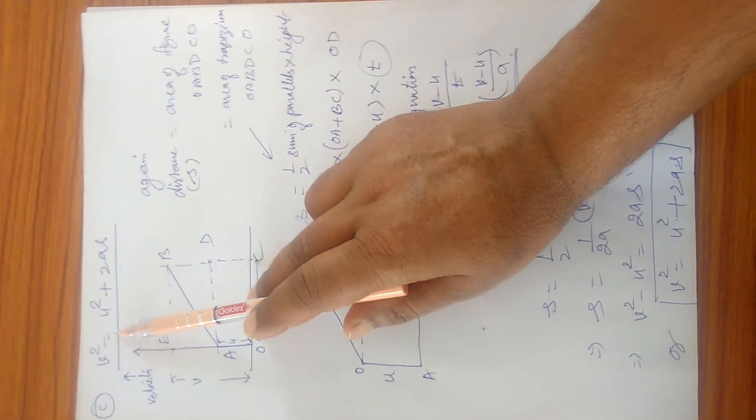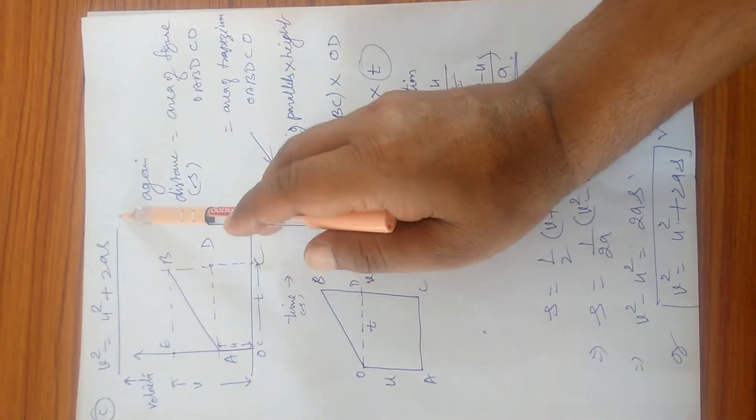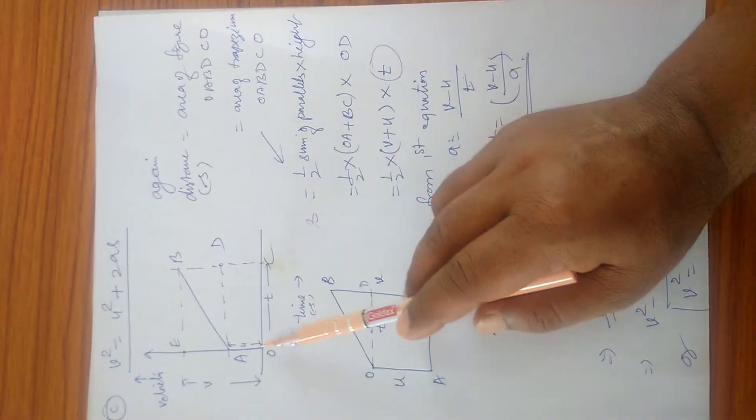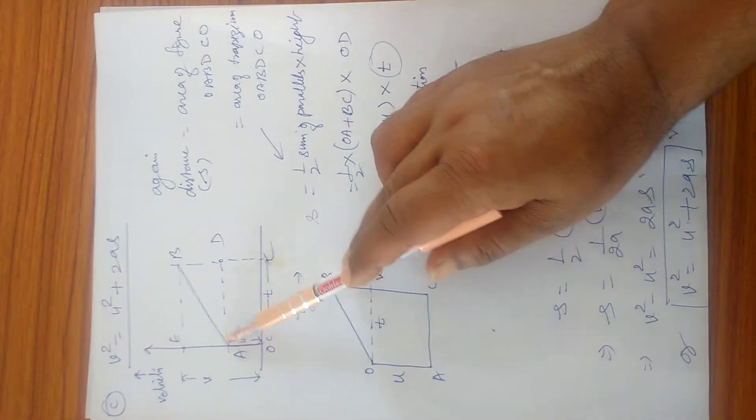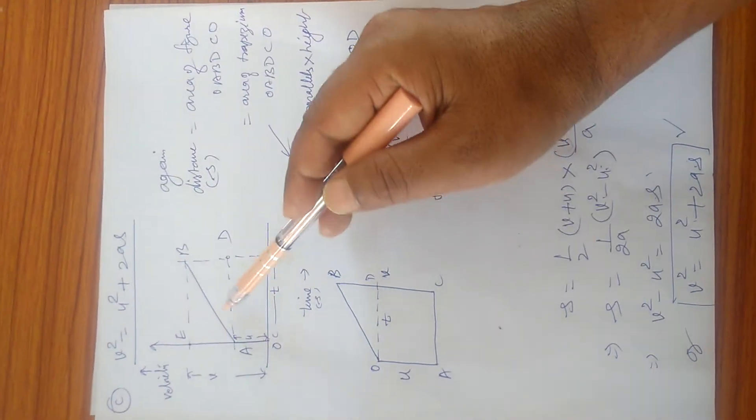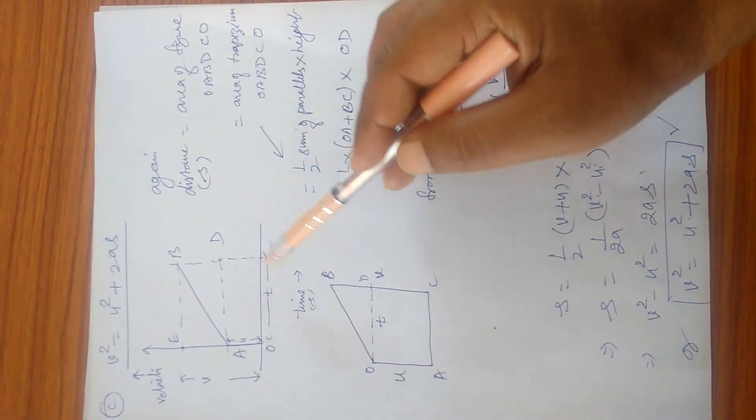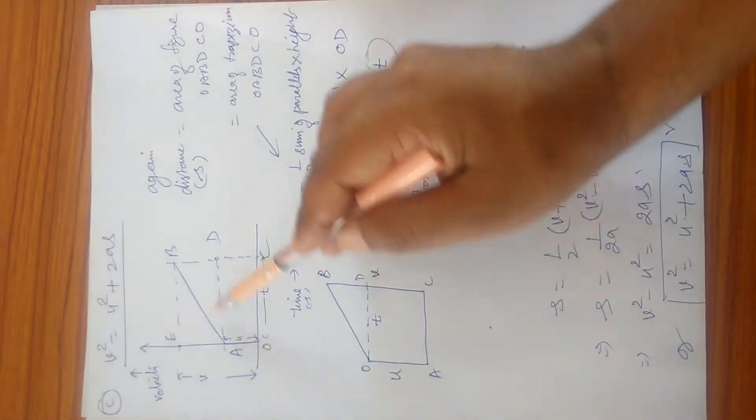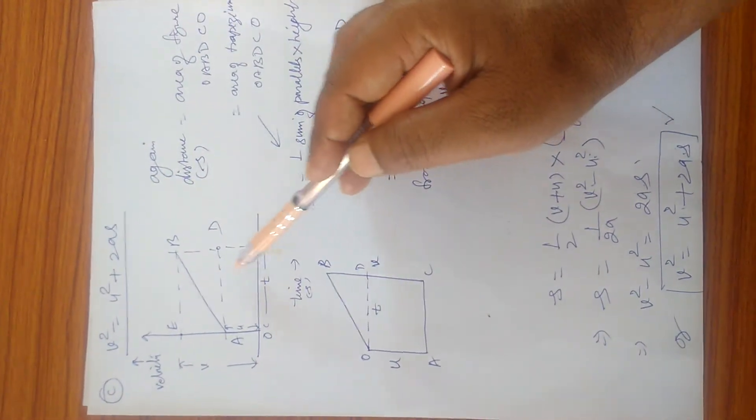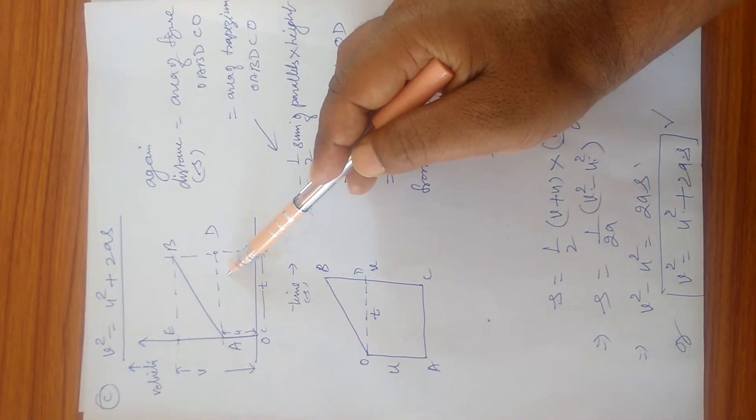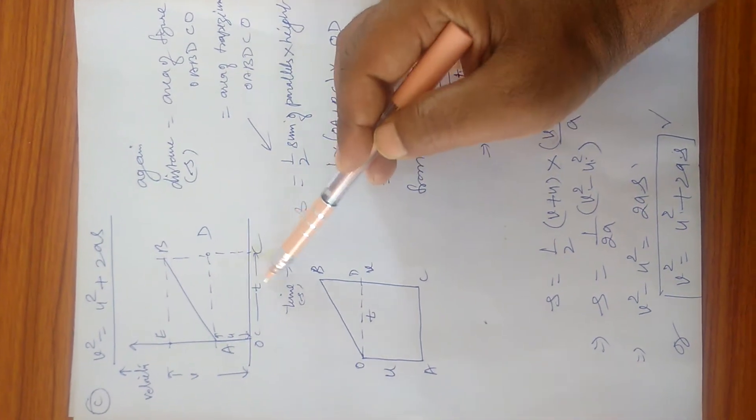We will derive the third equation of motion: v² = u² + 2as. We have drawn a velocity-time graph for uniform motion, that is AB, and the area under the curve is OABDCO. This figure represents the area under the curve AB, and this figure's area represents the distance traveled by the object in time t.